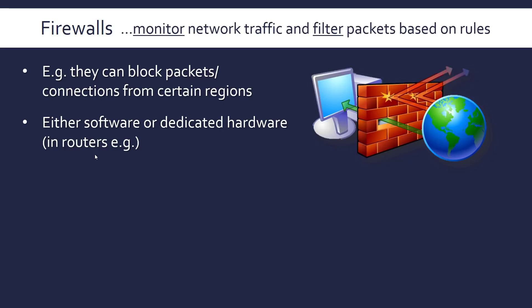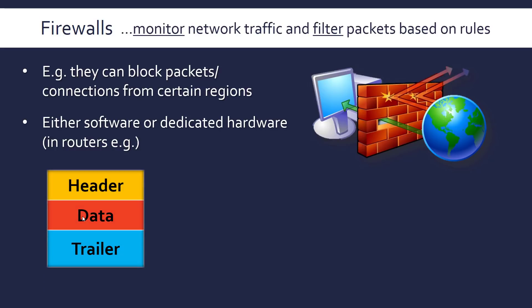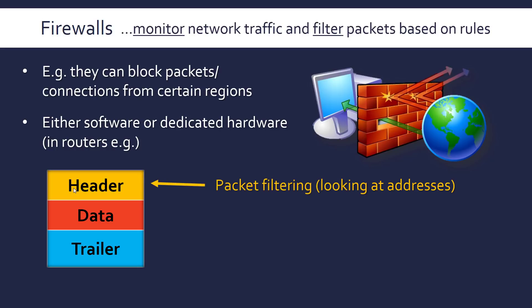Your router will probably have a firewall built in, and you can also have a firewall on your computer managed by an operating system, or a dedicated firewall for a business. Here is the model of a packet: we have the actual data comprising a small part of the total, plus a header and a trailer. The header is the most important part, as it contains information about IP addresses and MAC addresses. There are two generations of firewall.